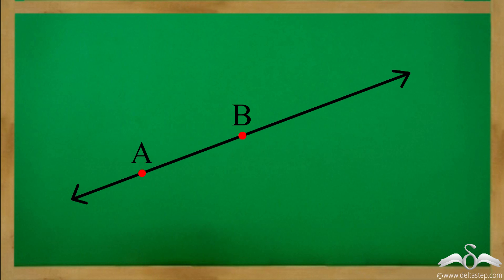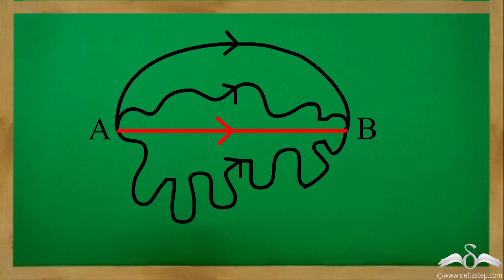A line segment is a part of a line. It has two distinct endpoints. It does not go on forever. If I have point A and point B, then I can join them in different ways.